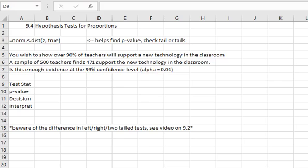With proportions, proportions always use the normal distribution, so we'll have to use equals norm.s.dist, open a parenthesis, and then our z-value or our test statistic, comma, true, and close the parenthesis.